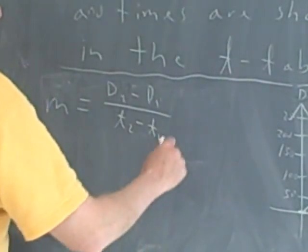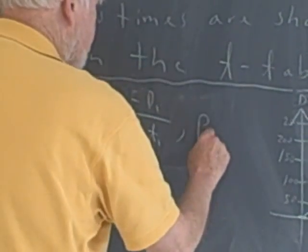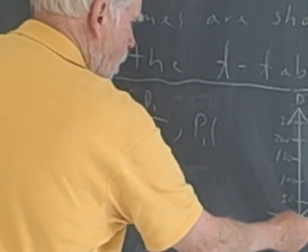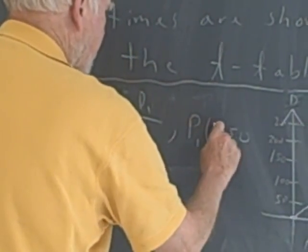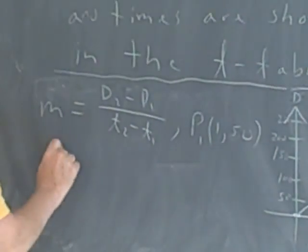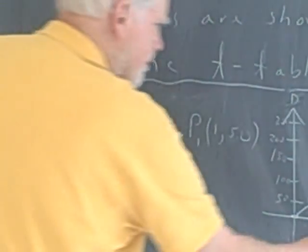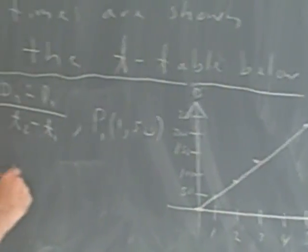So I also need some points, right? So why don't I take as point 1, I could take 1 and 50. And for point 2, I guess I'll take 3 and 150.